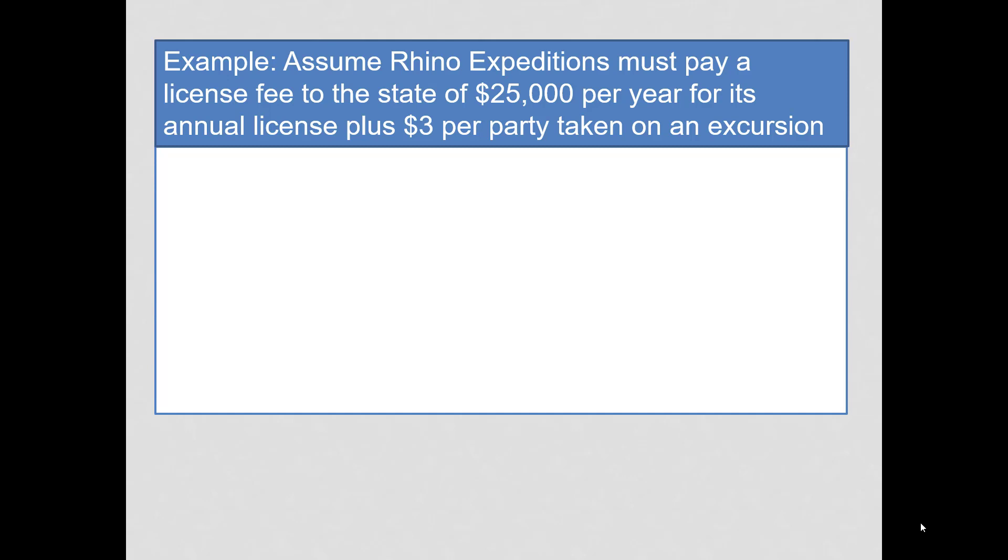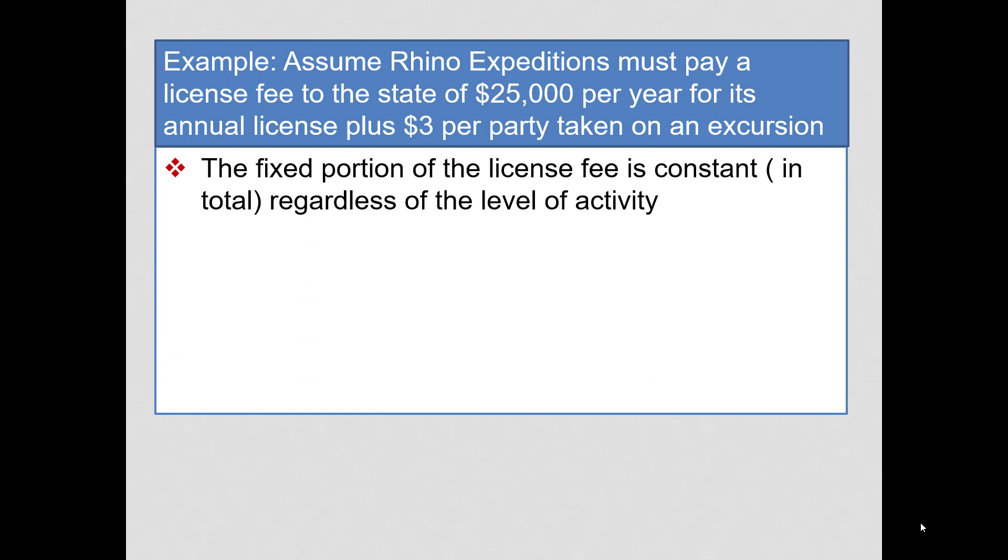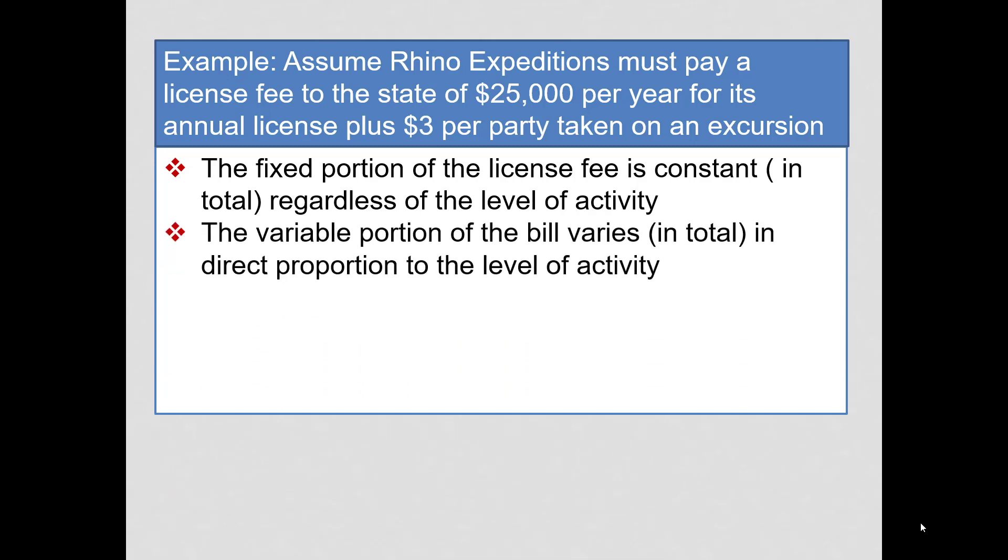Now, let's assume Rhino Expeditions must pay a license fee to the state of $25,000 per year for its annual license plus $3 per party taken on an excursion. You will notice that the fixed portion of the license fee is constant regardless of the level of activity. And the variable portion of the bill varies in total in direct proportion to the level of activity.